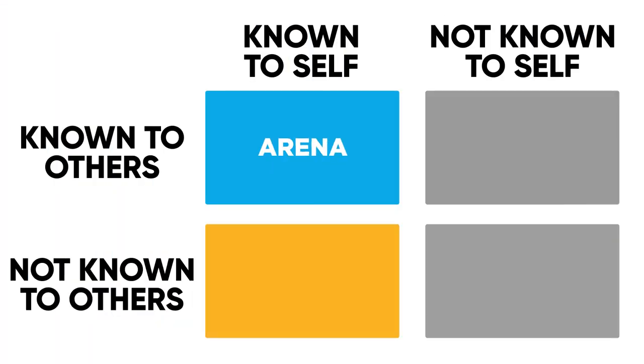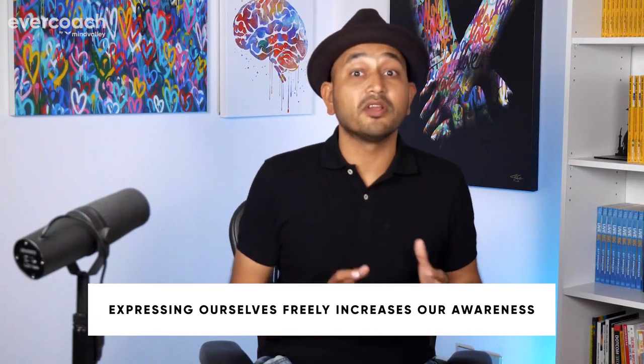The second window is called the facade window. This is the window where I know something about myself, but you probably don't. This really establishes things that we are hiding and not sharing, and because of that, making us less authentic. Our increased comfort of letting people know more about us from this facade window increases our awareness and also makes us a lot more authentic.